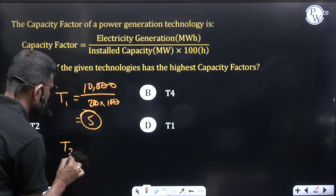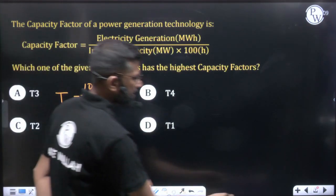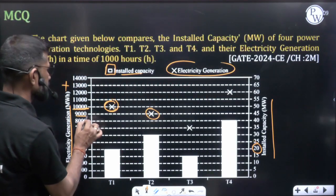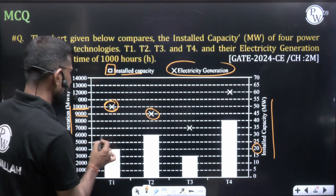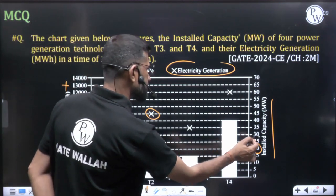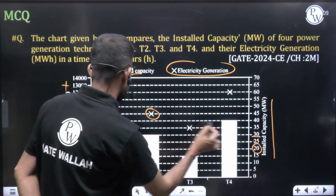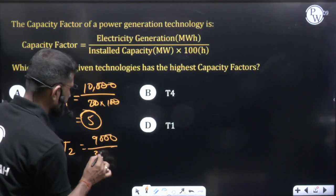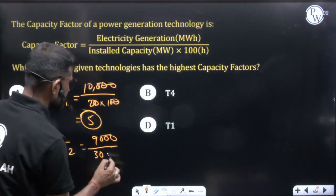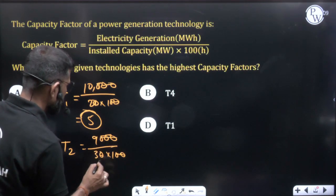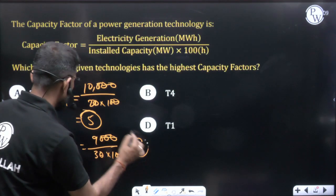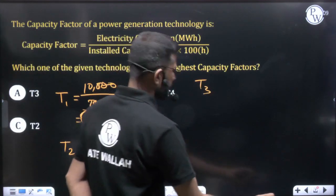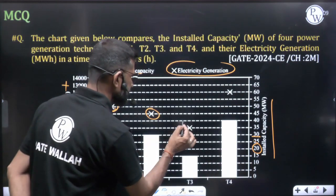For technology T2: electricity generation is 9,000 MWh, and installed capacity is 30 MW. So capacity factor = 9,000 divided by 30, multiplied by 100. After cancelling the zeros, 9 divided by 3 equals 3, giving a capacity factor of 30 for T2.